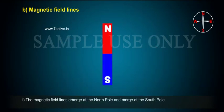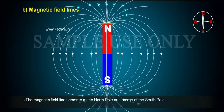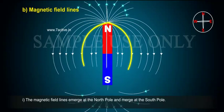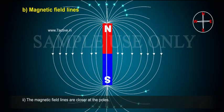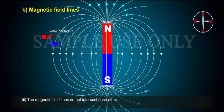1. The magnetic field lines emerge at the north pole and merge at the south pole. 2. The magnetic field lines are closer at the poles. 3. The magnetic field lines do not intersect each other.